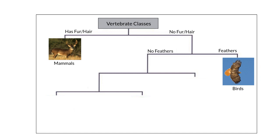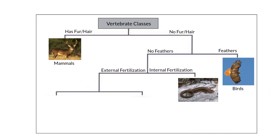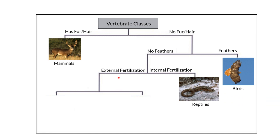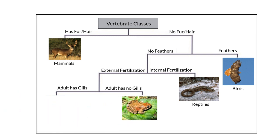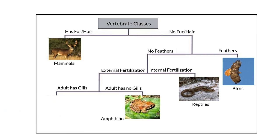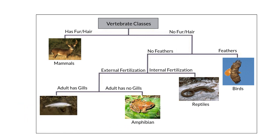If it has no feathers, we ask two more questions: does this animal use internal fertilization — meaning the eggs of the female are fertilized inside her body — or does it use external fertilization, where the eggs are fertilized outside her body? If they use internal fertilization, it belongs to a group called reptiles; in this case, we have an alligator lizard. Going down the external fertilization pathway, we ask: does the adult have gills or no gills? If it has no gills, we call these animals amphibians, such as frogs and salamanders. If the adult does have gills, we would say it's a fish.